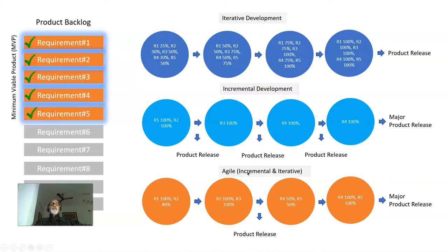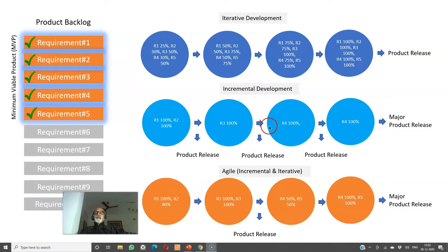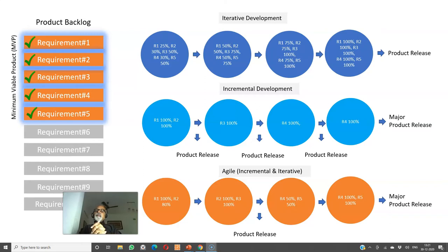We have iterative development, incremental development, and agile development, which is both incremental and iterative. To understand this in detail, the first thing is we need to understand the product backlog. Product backlog is a set of features that will get into the product. Now we have prioritized the features, and we are saying if I release requirements one to five, the customer can start using it and get some value out of it. We call it the minimum viable product, or MVP — the bare minimum set of features which the customer can start using or selling to their customers.